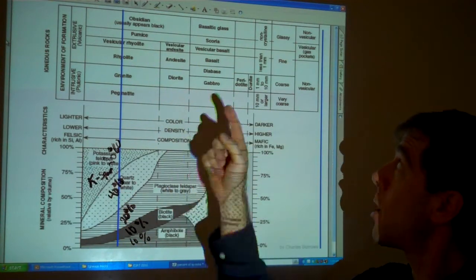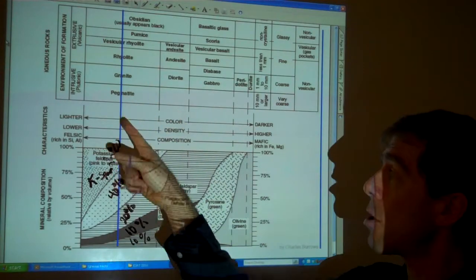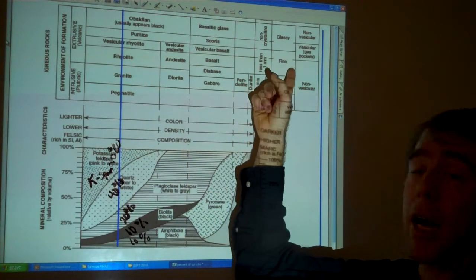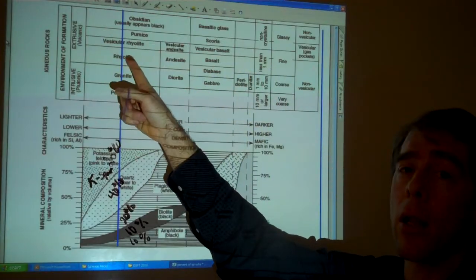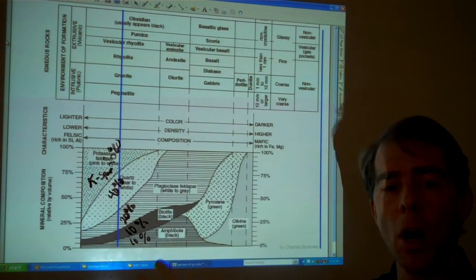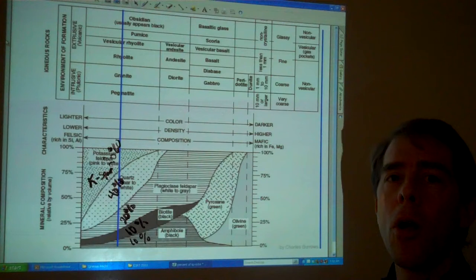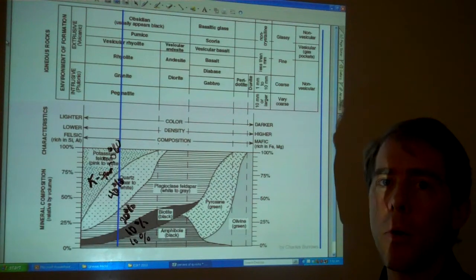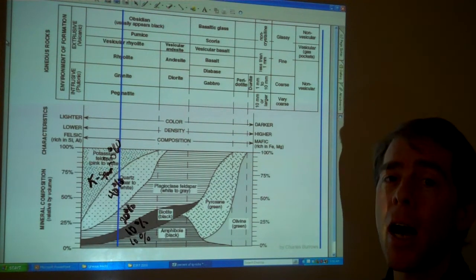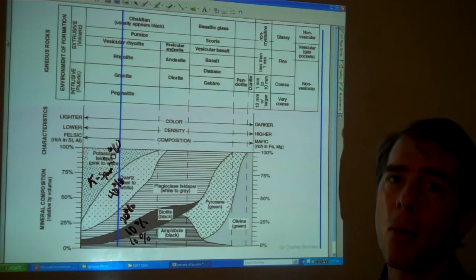If it's an extrusive rock with the same composition, but it doesn't have gas pockets, but it does have crystals, then it's rhyolite. So we use this chart to help us figure out the type of rocks that we're working with, and help us identify the rock based on what minerals make them up.